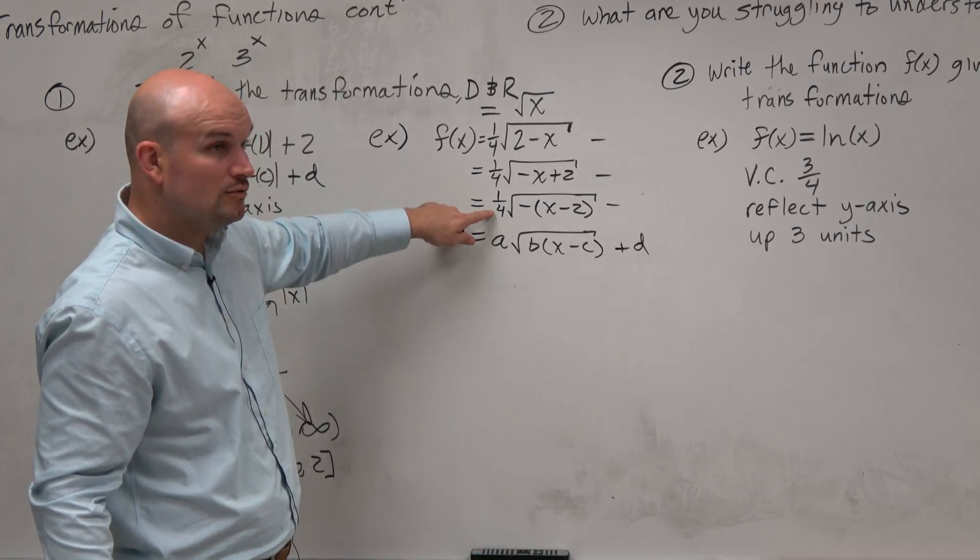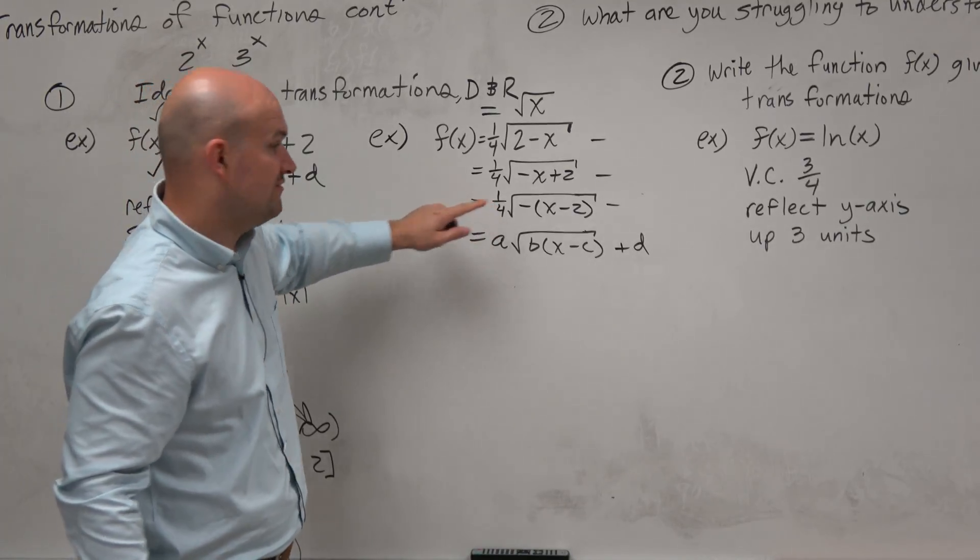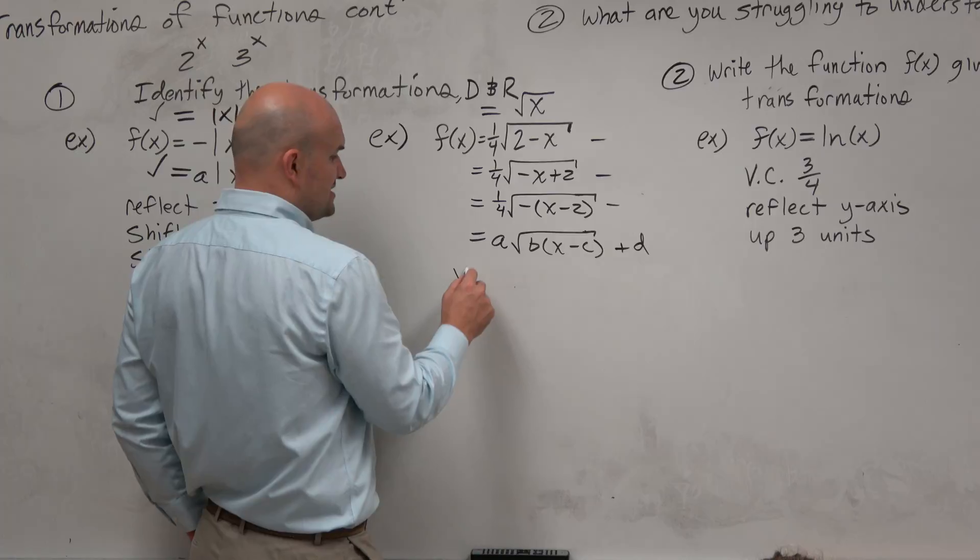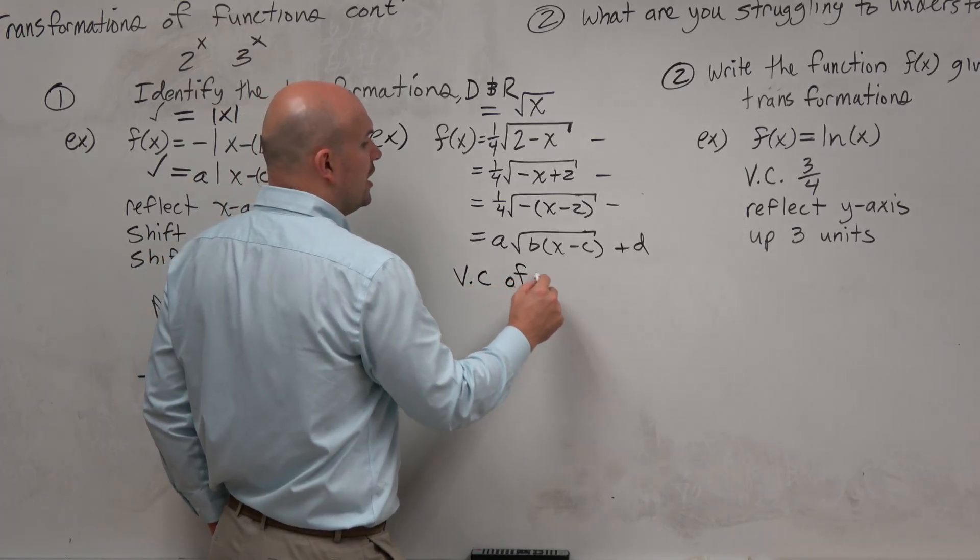But in this case, you can see I have an a, which is 1 fourth. So since my a is 1 fourth, that means it's going to be a vertical compression of 1 fourth.